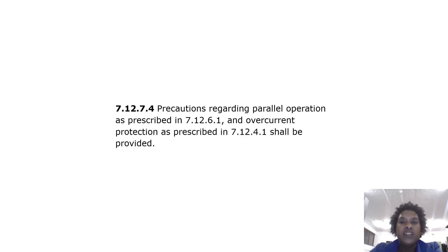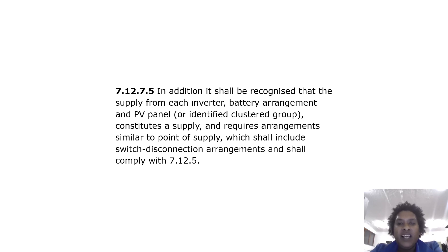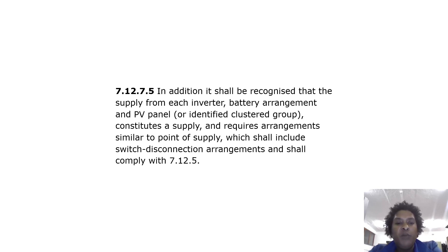Precautions regarding parallel operation as prescribed in 7.12.6.1 and overcurrent protection as prescribed in 7.12.4.1 shall be provided. It shall be recognised that the supply from each inverter battery arrangement and PV panel or identified clustered group constitutes a supply and requires arrangements similar to a point of supply, which shall include switch-disconnection arrangements and shall comply with 7.12.5.